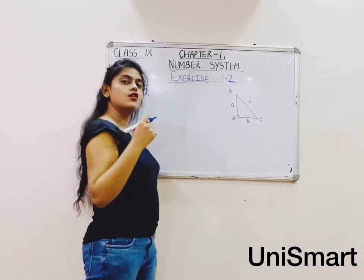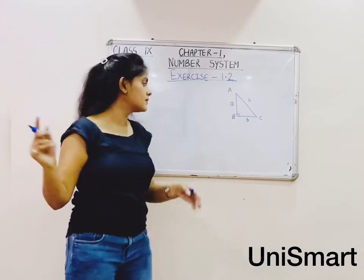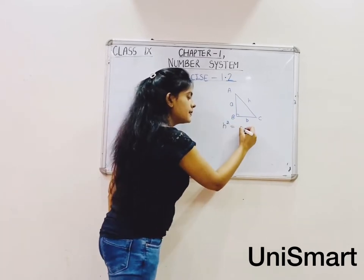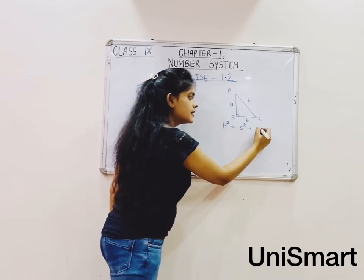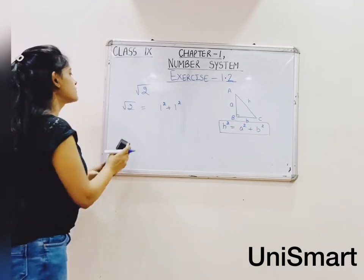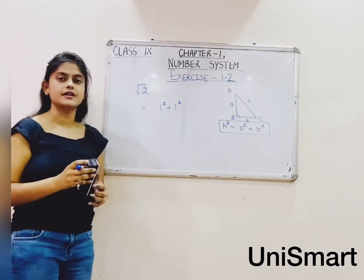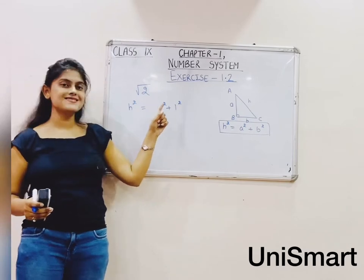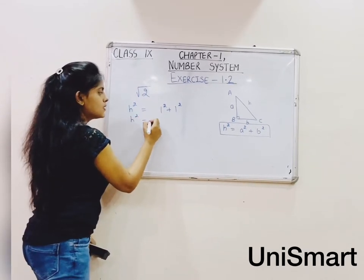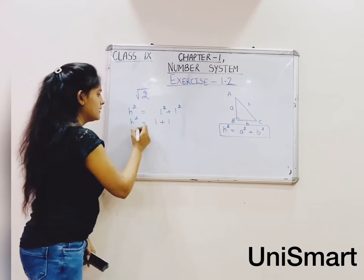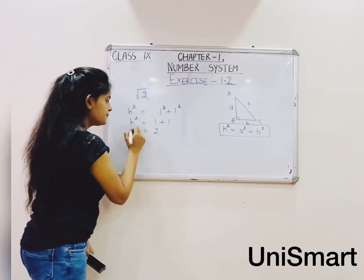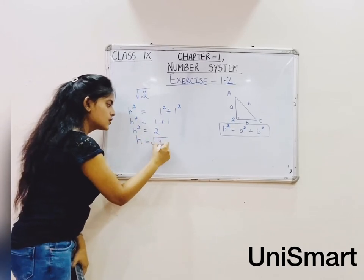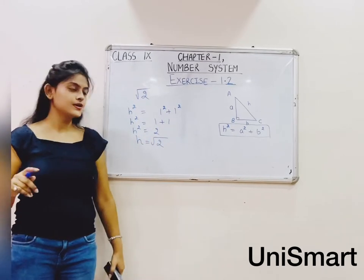By using the Pythagoras theorem: hypotenuse squared equals perpendicular squared plus base squared. So H squared equals 1 squared plus 1 squared, which gives H squared equals 1 plus 1 equals 2. Taking the square root, the value of H is root 2.